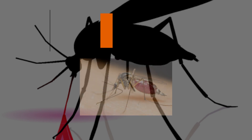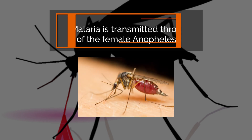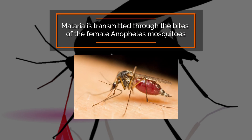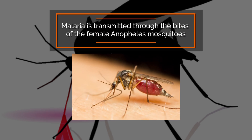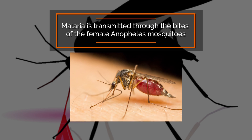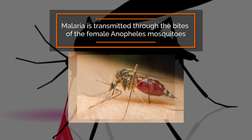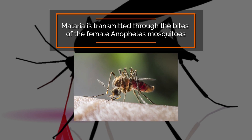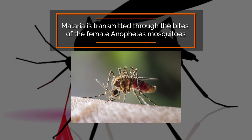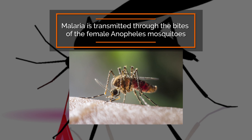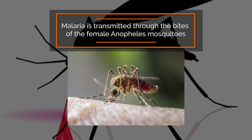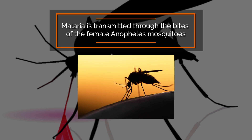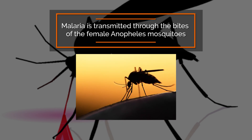In most cases malaria is transmitted through the bites of female Anopheles mosquitoes. There are more than 400 different species of Anopheles mosquitoes, and around 30 are malaria vectors of major importance. All of the important vector species bite between dusk and dawn.